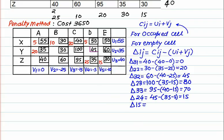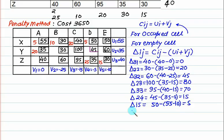Delta (1,5) is 50 minus corresponding column value 55, minus 10, giving approximately minus 50. The remaining delta calculations yield minus 50 for subsequent unoccupied cells.